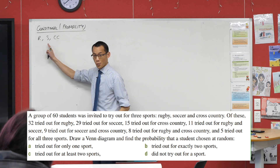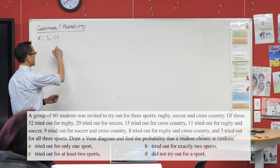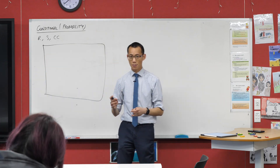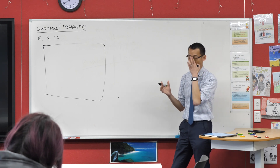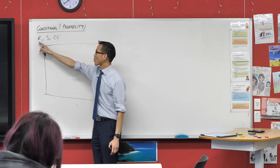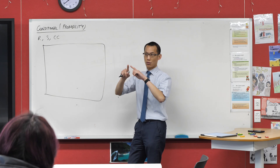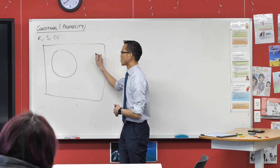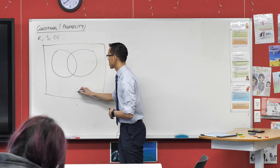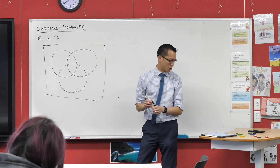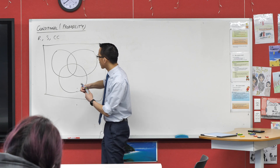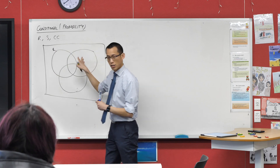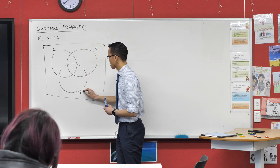Because there are three things, I'm going to ask you to draw up a big box indicating all of our students — everyone in the sample space. Because there are three different options, I'll draw a circle for each: a rugby circle, a soccer one, and a cross country one, labelled accordingly.